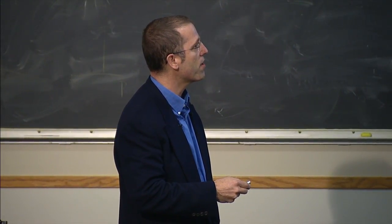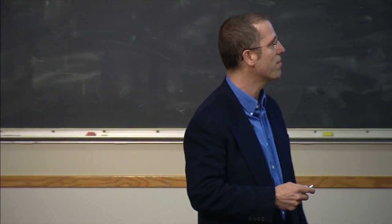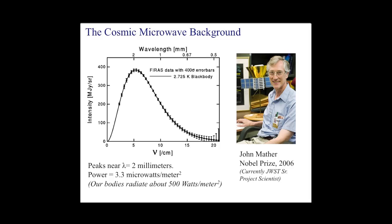John Mather is currently the James Webb Space Telescope Senior Project Scientist — a Nobel laureate still doing great things. Today this spectrum peaks near a wavelength of two millimeters, which will come up over and over again in this talk. You can measure it from one millimeter out to about 10 millimeters or so.